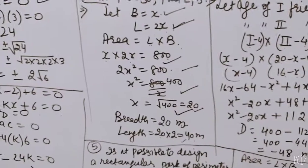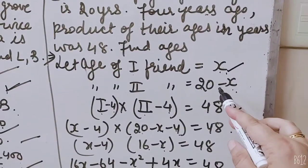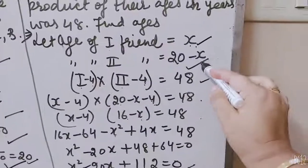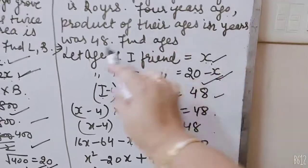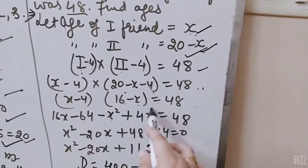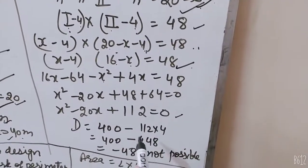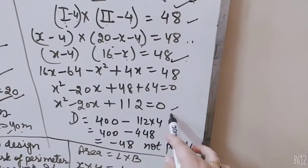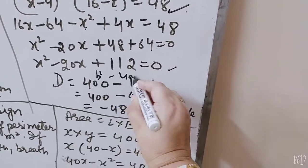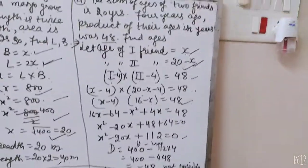The sum of ages of 2 friends is 20 years. Four years ago, the product of their ages was 48. Let ages be x and 20 minus x. Four years ago, (x minus 4)(16 minus x) equals 48. Multiplying and solving the quadratic, x squared minus 20x plus 112 equals 0. Finding D, when we solve, D is negative. It means ages can't be negative, so we reject this. This question is not possible.